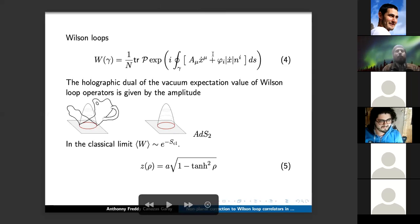Next. The relevant observables that we want to describe using the correspondence are the Wilson loops. As you can see, not only the coupling to the gauge field, but also a coupling to the scalars enters the game with a unit vector. And the holographic dual of the vacuum expectation value of a Wilson loop is given by the amplitude that you can see on the left. So it is a sum over all the possible worldsheets ending on the loop. In the classical limit, this reduces to e to the minus the classical action, which turns out to be e to the square root of lambda. In the case of the circle, the minimum worldsheet is AdS_2 and can be parameterized by a rho variable as you can see in the last equation.